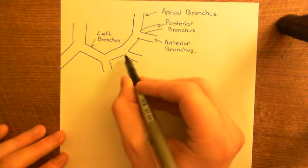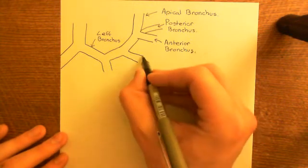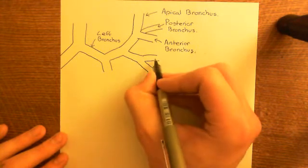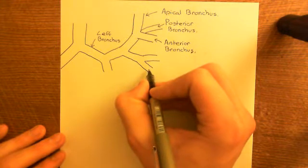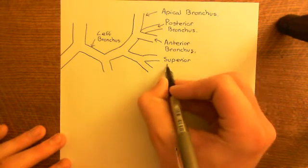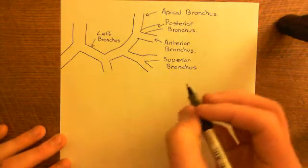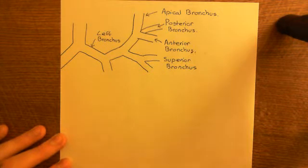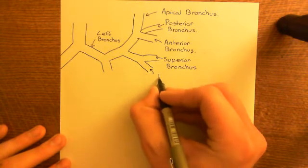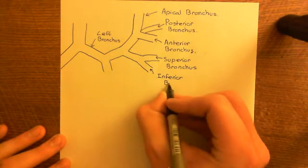Now let's look at the other portion of the bronchus supplying the upper lobe — the part going to the lingula. This splits into two portions: a superior bronchus, which supplies the upper portion of the lingula, and an inferior bronchus, which supplies the lower portion of the lingula. These names are new — we haven't seen a bronchus called the superior and inferior bronchus yet. It is good practice to specify superior bronchus of the left lung and inferior bronchus of the left lung.